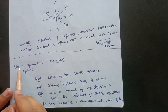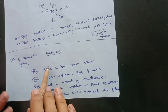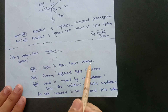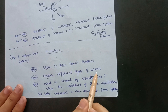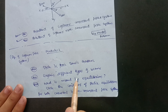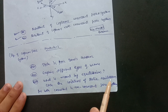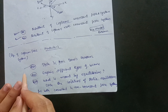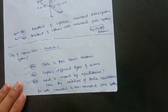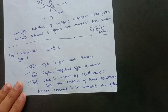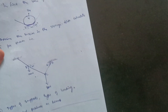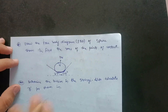Module 2 is the equilibrium of coplanar force systems. Theory questions include: state and prove Lami's theorem, explain different types of beams, what is meant by equilibrium, and state the conditions of static equilibrium for both concurrent and non-concurrent force systems. These are the most important questions which will definitely appear in the examination.